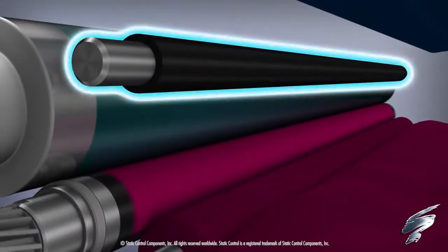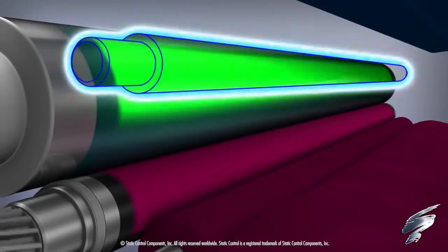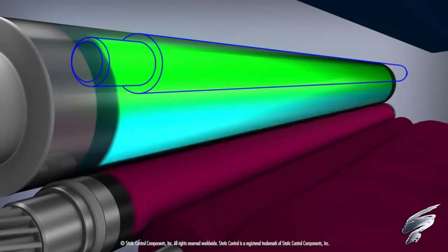The primary charge roller, or PCR, rotates next to the OPC drum and applies a negative charge to the surface of the OPC drum, which prepares it for the imaging process.